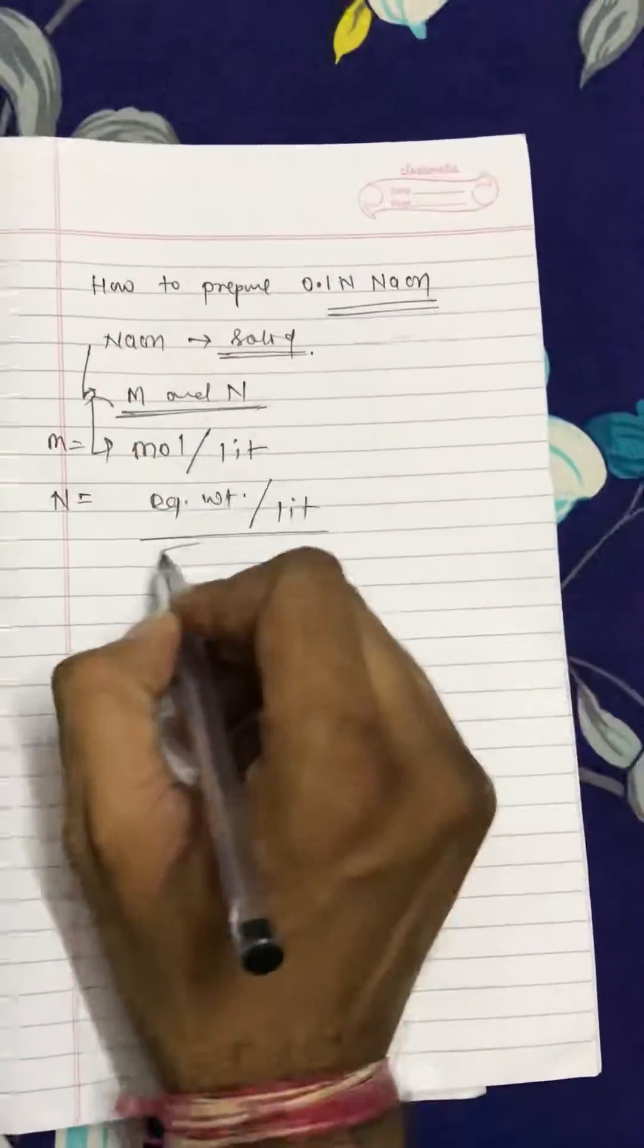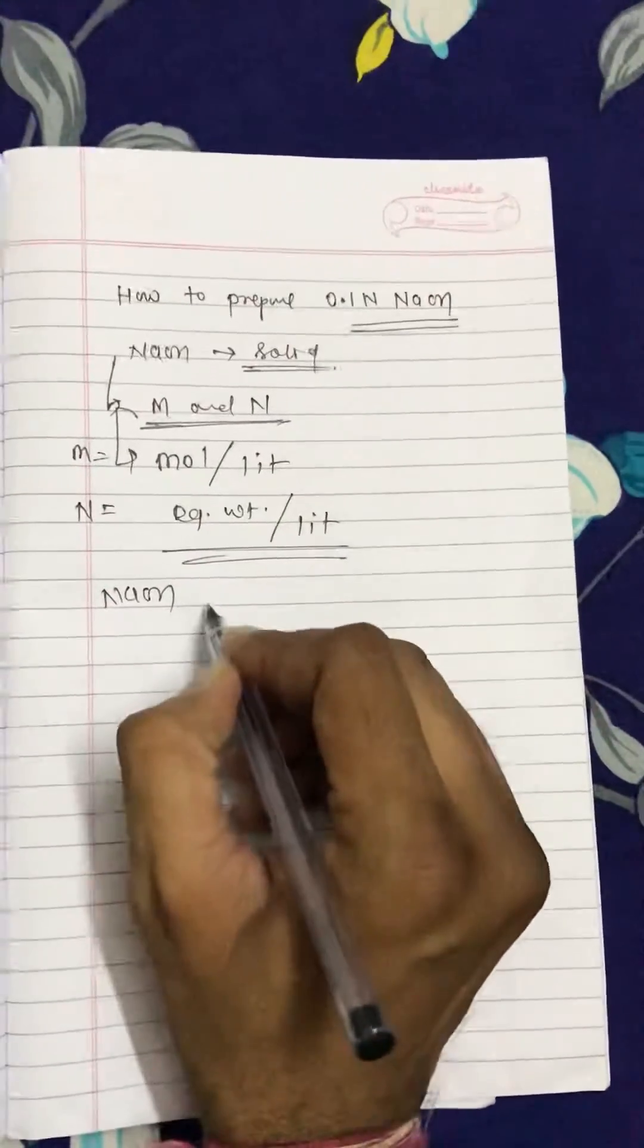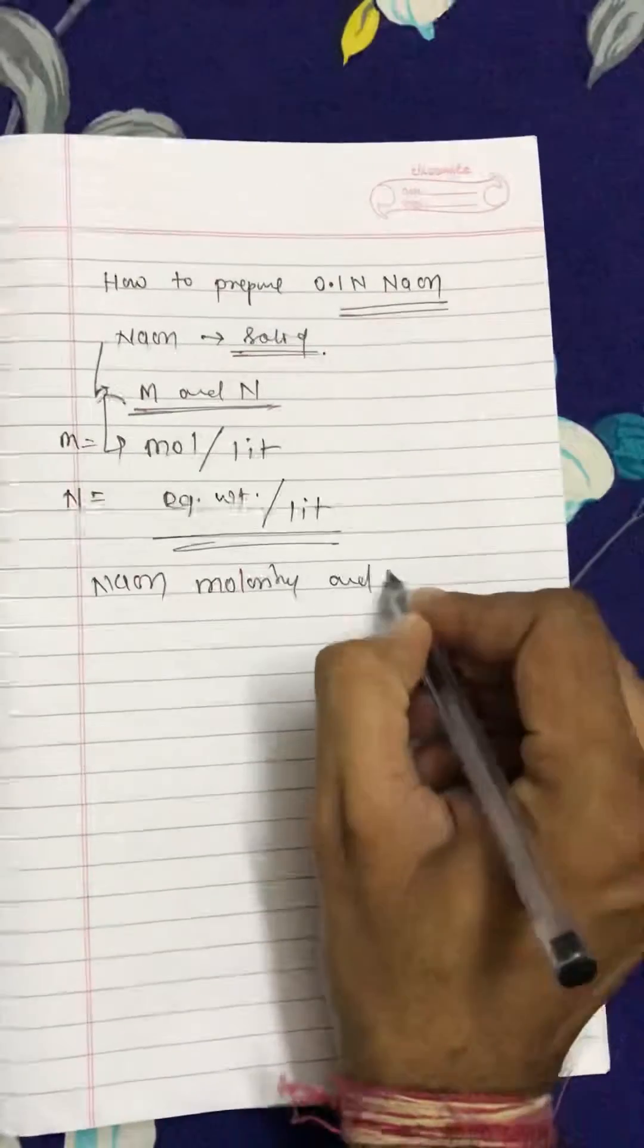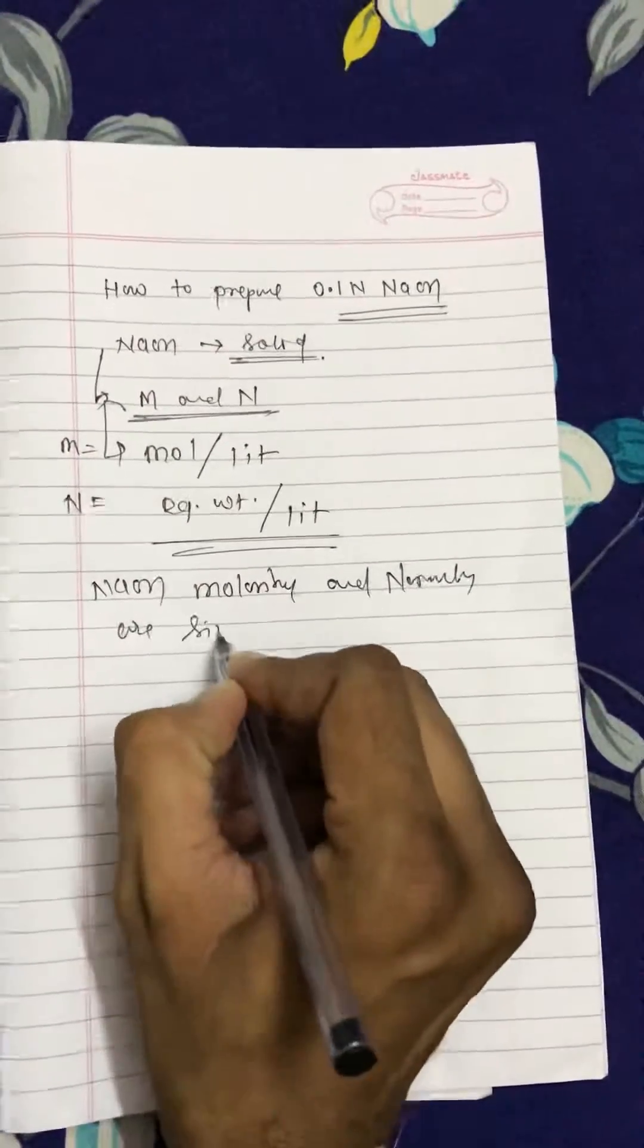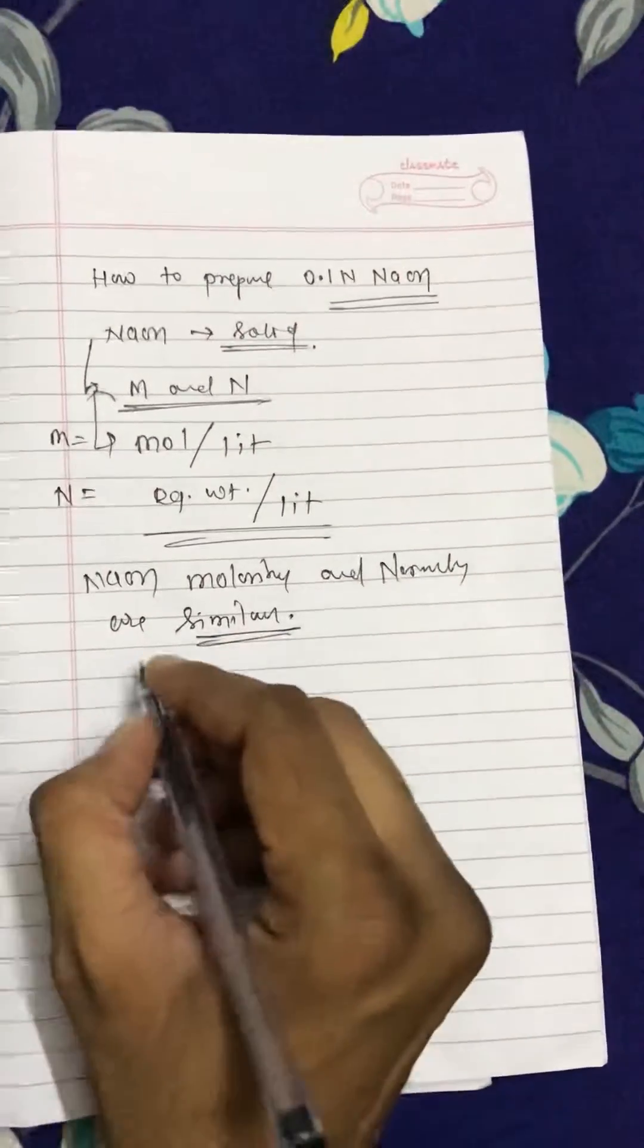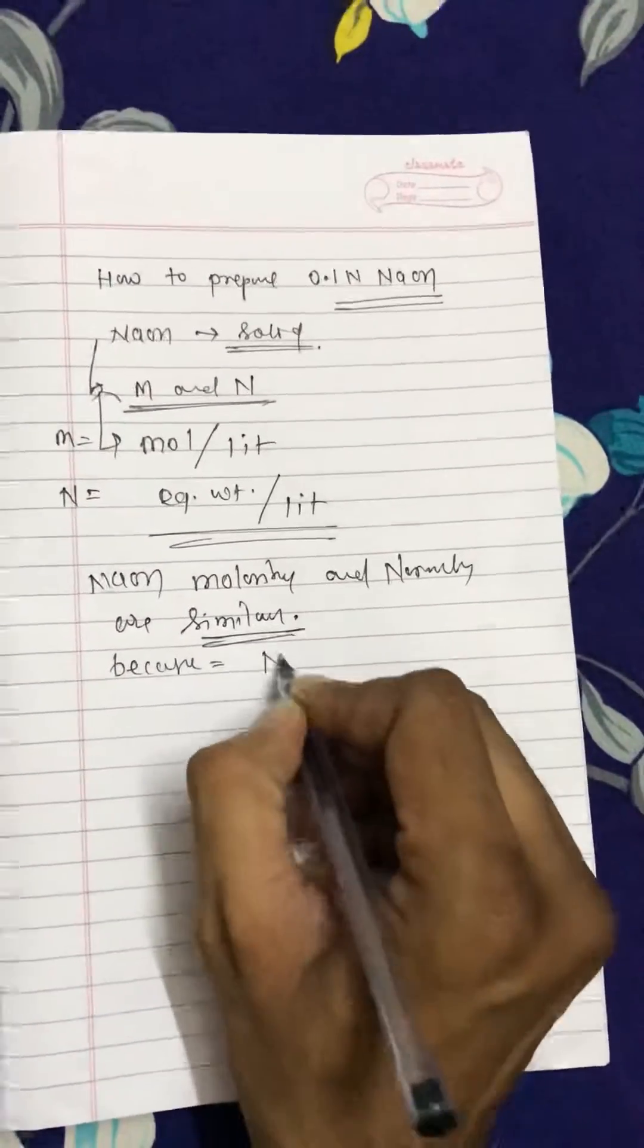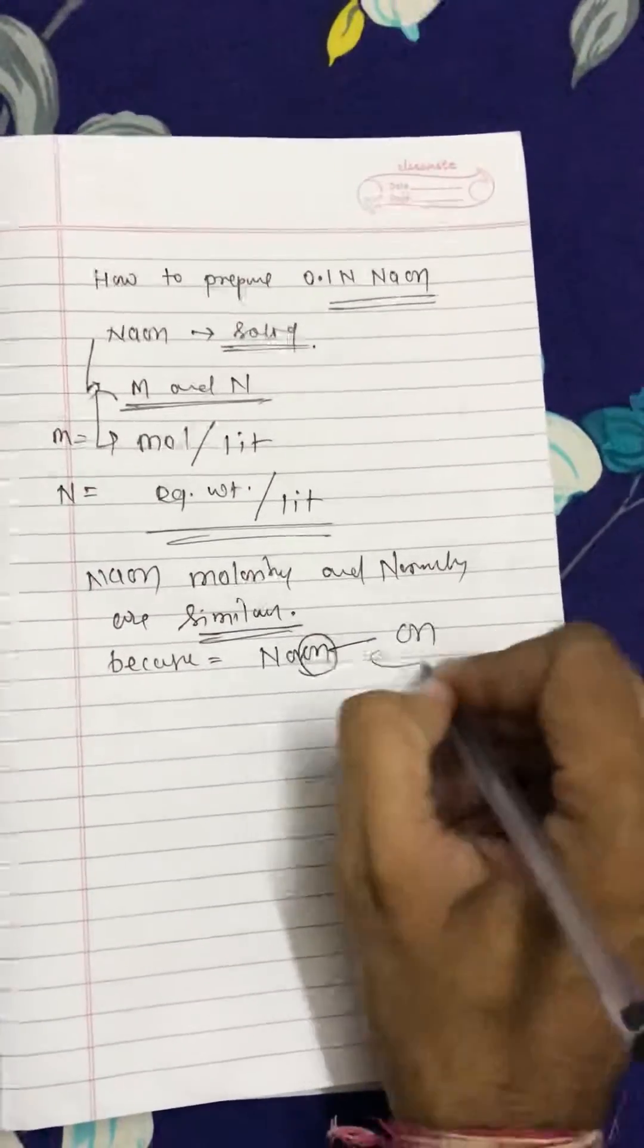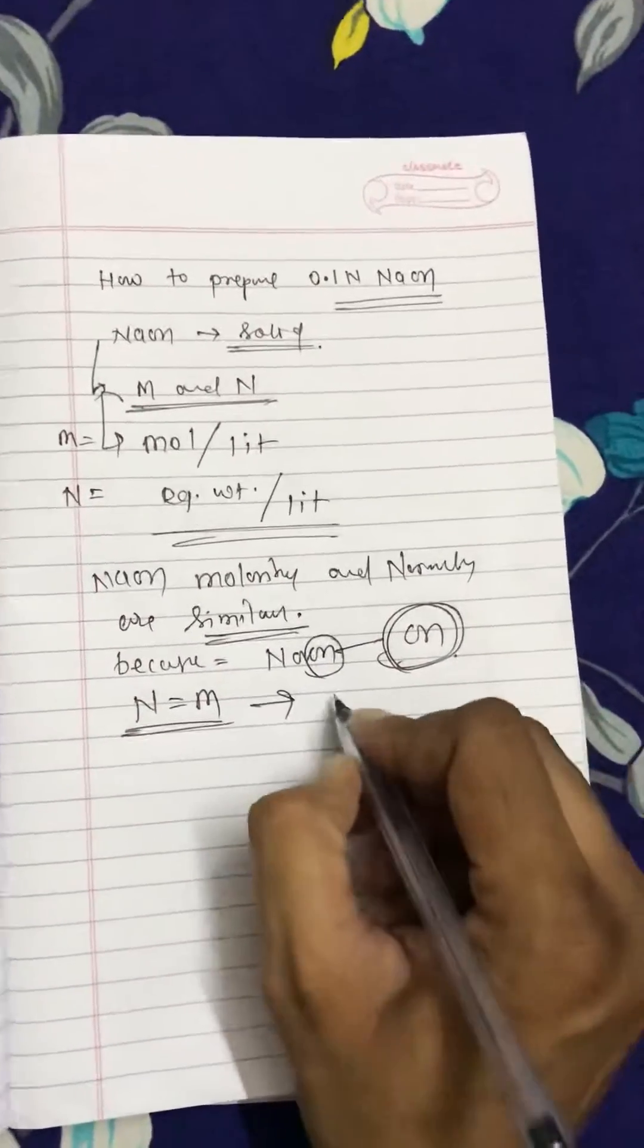In the case of NaOH, the molarity and normality are similar. Why similar? Because NaOH contains one molecule of OH-, that's why normality and molarity are similar for NaOH.